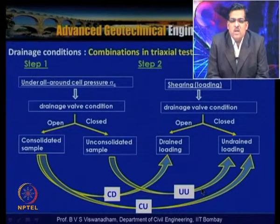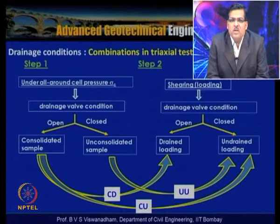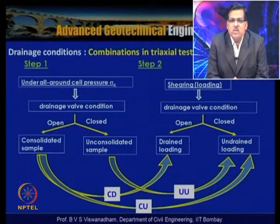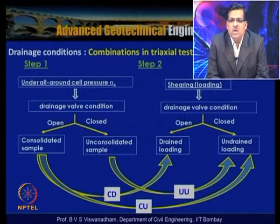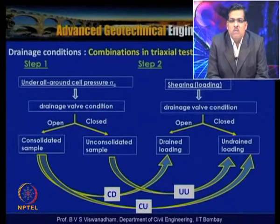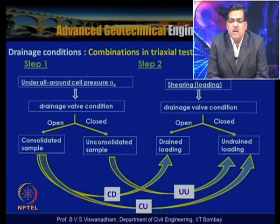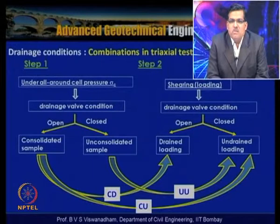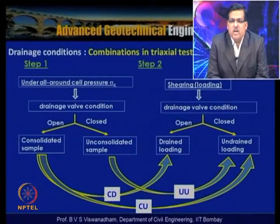The unconsolidated undrained (UU) triaxial test is a quick test where the sample is tested without any consolidation under three different cell pressures. If the sample is saturated, the deviator load remains the same at all cell pressures, giving the undrained shear strength Cu with a horizontal failure envelope. Different triaxial tests—CU, CD, and UU—are selected based on practical field conditions.